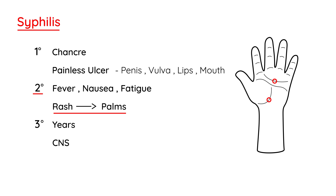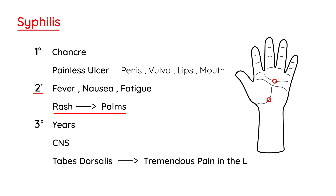One aspect of tertiary syphilis I really wanted to touch on is something called tabes dorsalis. Tabes dorsalis is a rather tragic complication that involves the slow progressive degeneration of the nerves, which can lead to tremendous pain in the legs, gait ataxia — where the person is not able to walk properly — and several other sensation-related abnormalities.